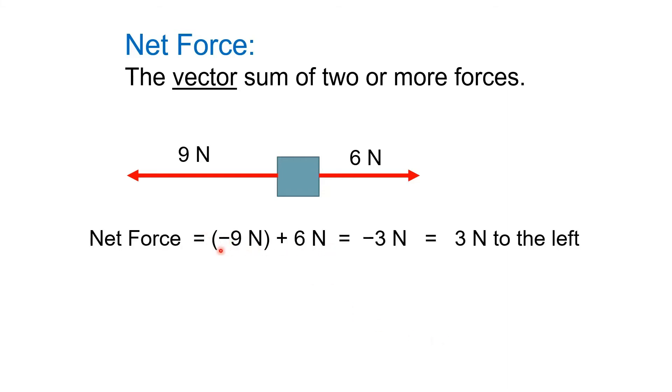So we're adding the two vectors, but we're considering the directions as well. So we're going to say left is negative. In this case, we end up with a negative three newtons, which is just telling us that it's three newtons of force to the left. So from the box's perspective, it's just three newtons left.